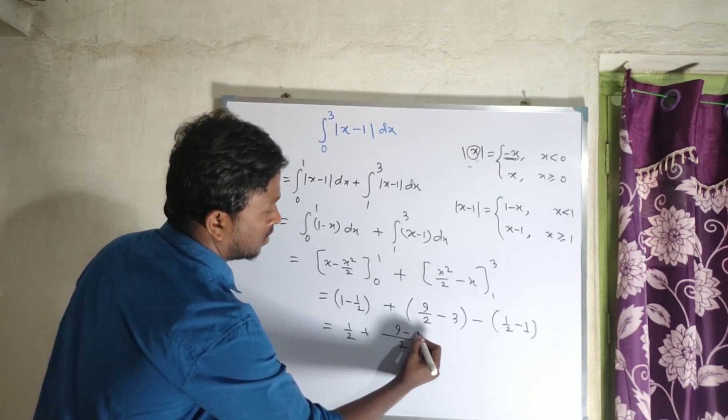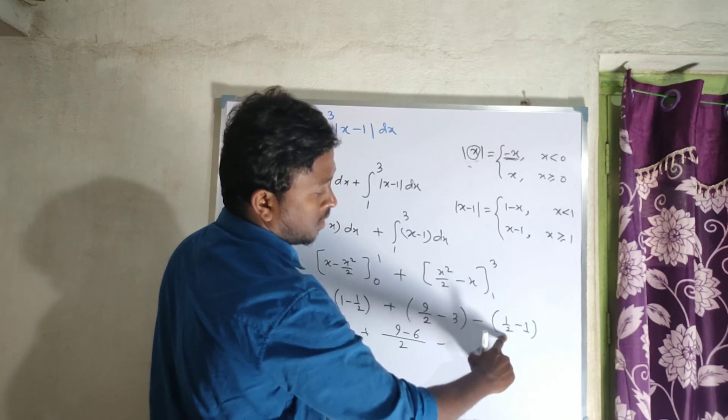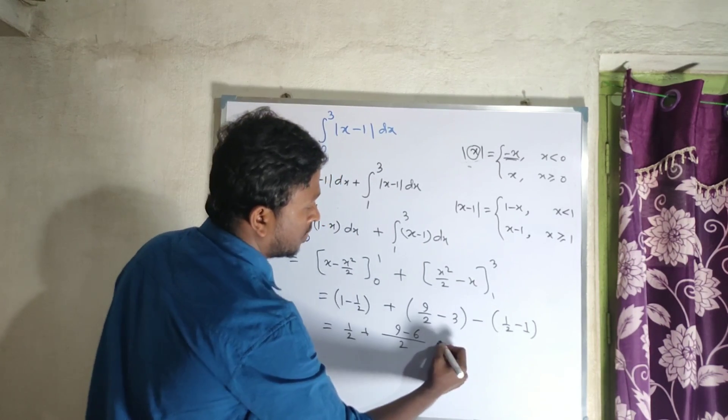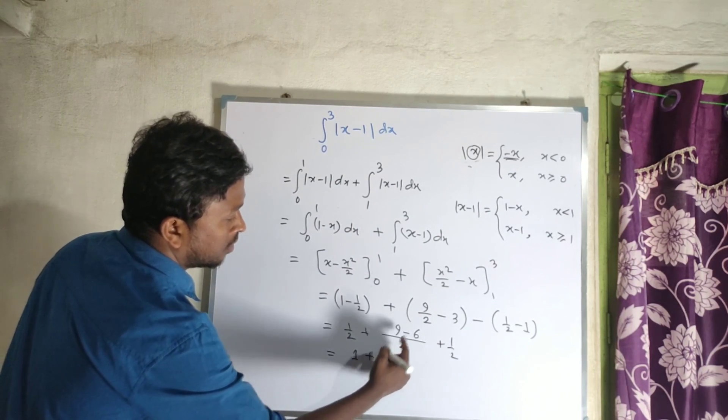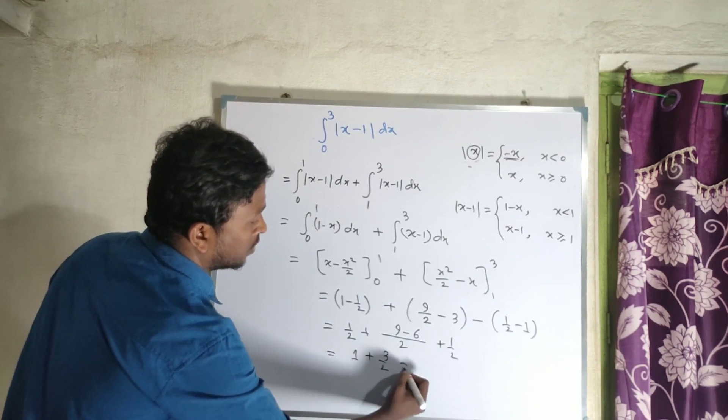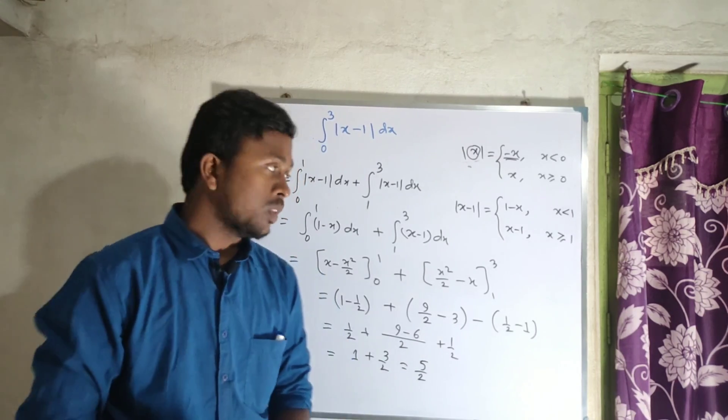This simplifies to half minus half plus 9 by 2 minus 3 minus half plus half. The halves cancel, leaving 9 minus 6 by 2, which equals 3 by 2 plus 1, which is 5 by 2 or 2.5. This is the answer to the first problem.